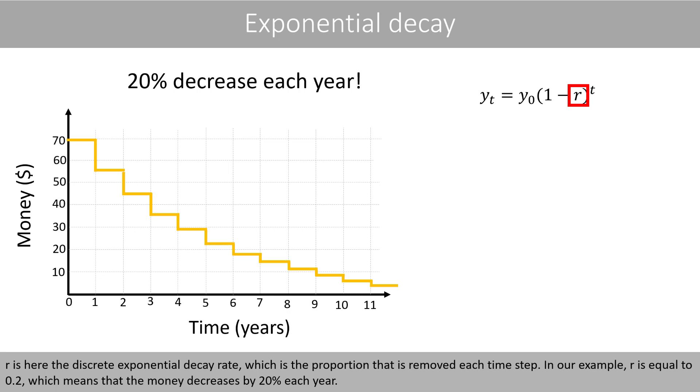In our example, r is equal to 0.2, which means that the money decreases by 20% each year.